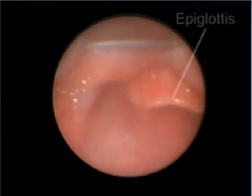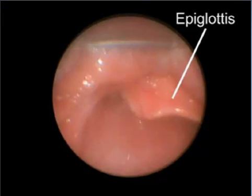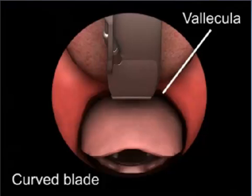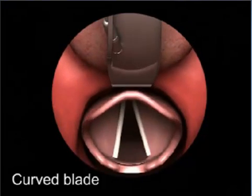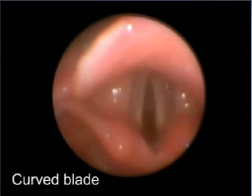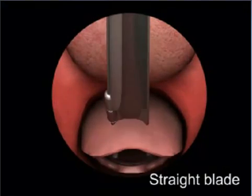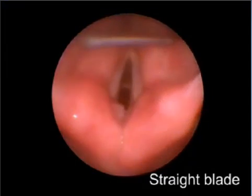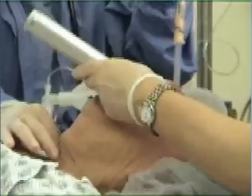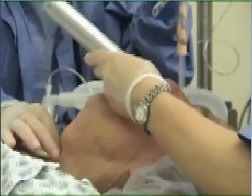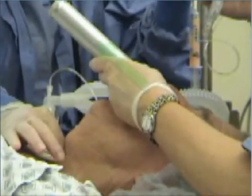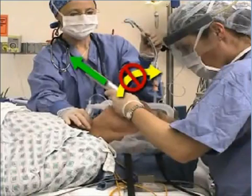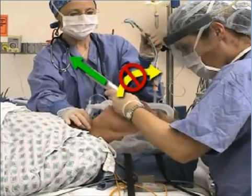Visualize the epiglottis. Ideal placement of the laryngoscope blade depends on whether a curved or straight blade is used. Place the tip of the curved blade into the vallecula between the base of the tongue and the epiglottis, and lift anteriorly to expose the vocal cords. When using a straight blade, place the tip of the blade just past the epiglottis and lift anteriorly to expose the vocal cords. When the tip of the blade is correctly positioned, lift the laryngoscope upwards and forwards at a 45-degree angle. Direct the force of your lift along the axis of the laryngoscope handle in the direction of the ceiling over the patient's feet. Avoid bending your wrist or rocking the blade against the patient's teeth, which can result in dental or soft tissue injury and will not enhance the view of the glottis.